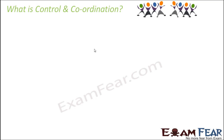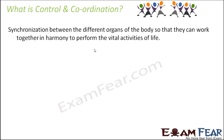What is control and coordination? In this lesson, we are going to talk about chemical coordination — how the synchronization or coordination inside our body takes place with the help of chemicals. Let us quickly review what control and coordination is. It is the synchronization between the different organs of the body so that they can work together in harmony to perform the vital activities of life.